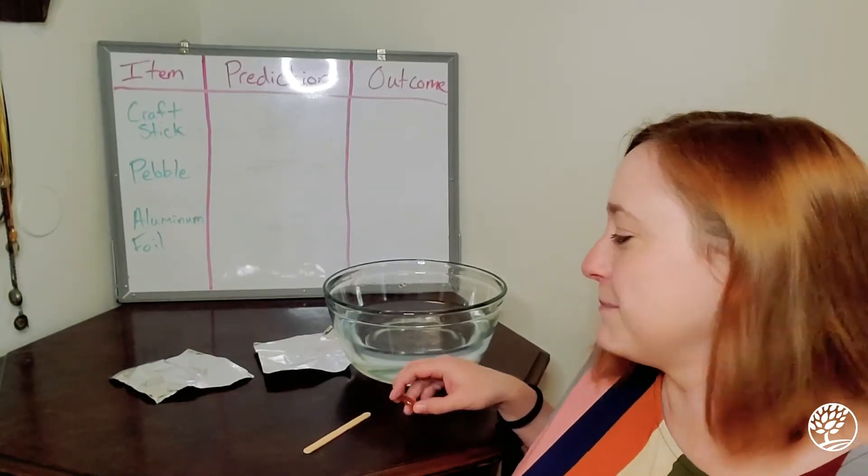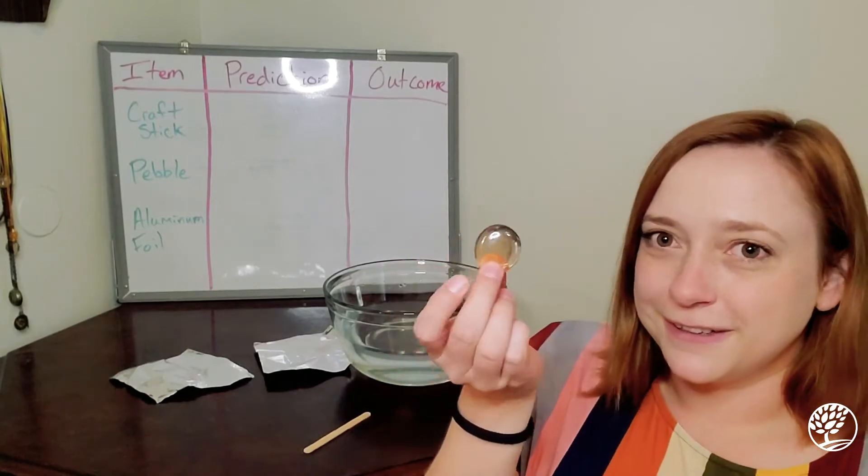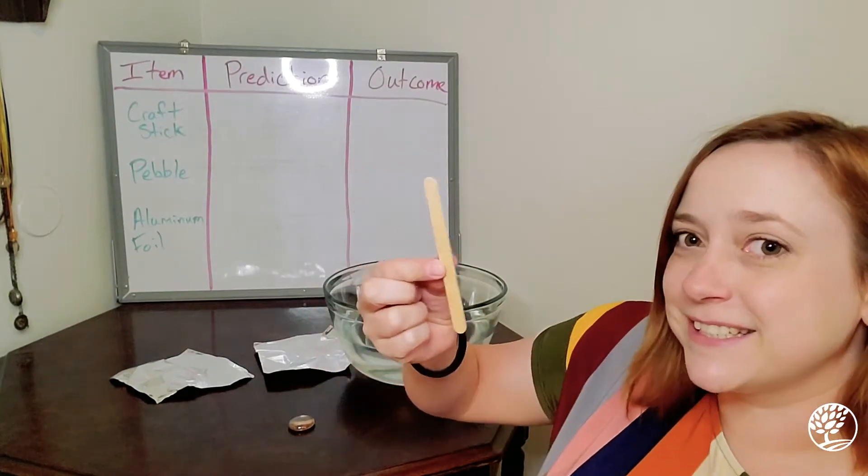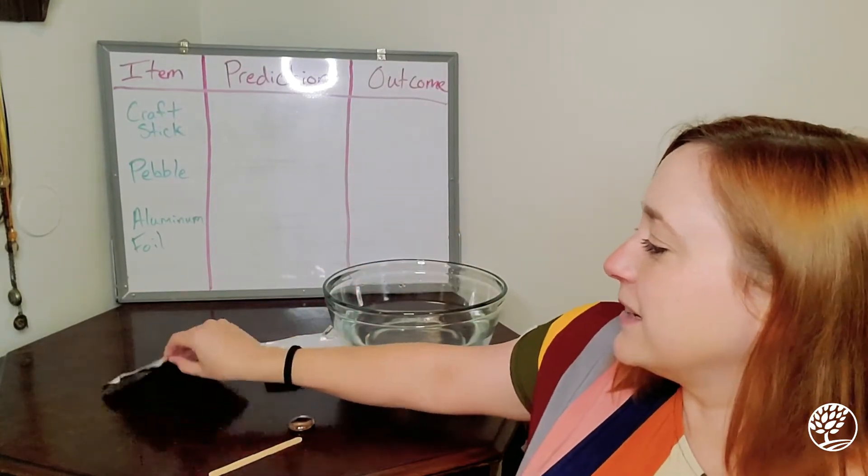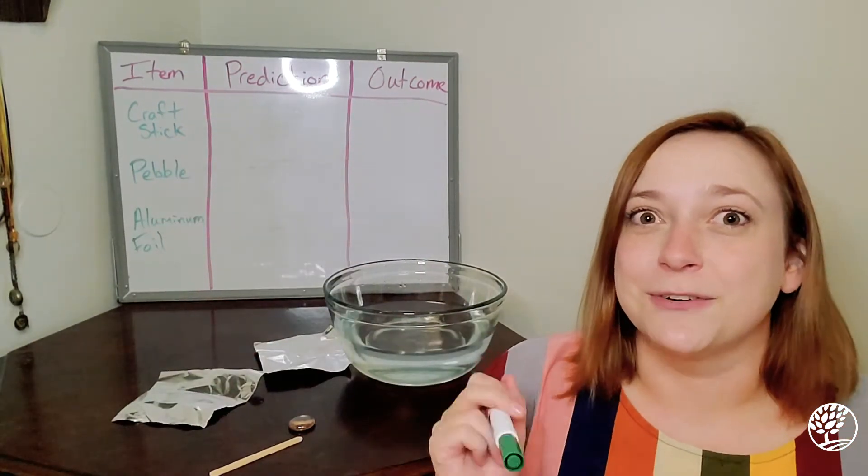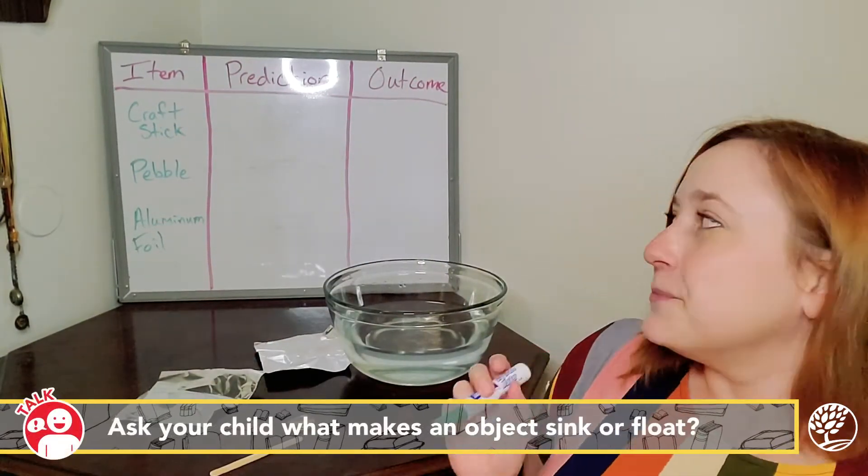I have a little glass bead which I'm calling a pebble today, a craft stick, and aluminum foil. So we're going to test these objects to see if they sink or they float.